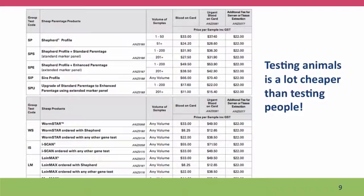This testing sounds like a big deal, but it's actually pretty cheap — a lot cheaper than testing people, presumably because all of the regulatory bodies don't enter into it. For sheep, it's $11 to upgrade to enhanced parentage, $33 for a complete profile, and really $8.25 for a Voin Max test, whatever that is. These are not very expensive at all.